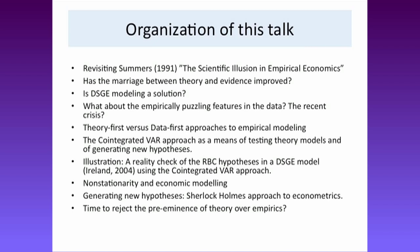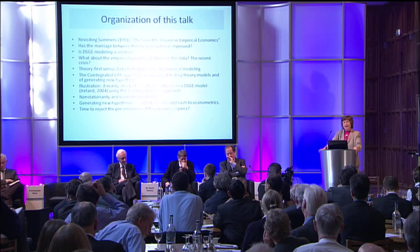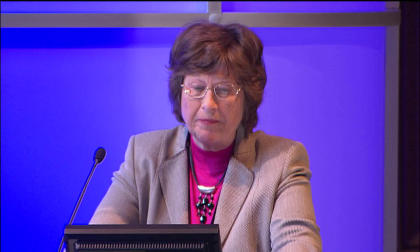The role of theory and evidence in macroeconomic modeling has a long history. I decided to go back 20 years in time, revisiting Summers' 1991 paper, 'The Scientific Illusion in Empirical Economics.' He argues in this paper that empirical modeling has not really been able to influence economic thinking, and he illustrates this with the representative agents approach and the use of sophisticated econometrics, VAR modeling à la Sims. He argues that this model cannot explain the vastly more complex and rich economic reality.